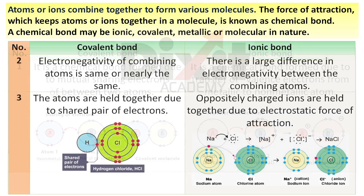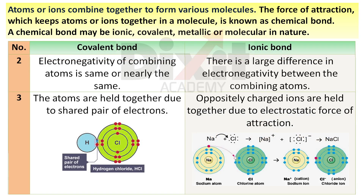Point number 2. In covalent bonding, the electronegativity of combining atoms is the same or nearly the same. In ionic bonding, there is a large difference in electronegativity between the combining atoms.